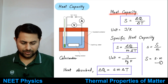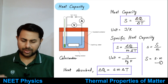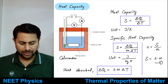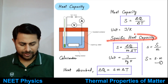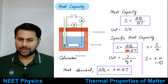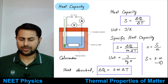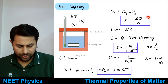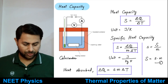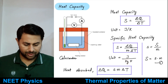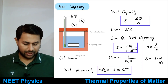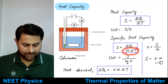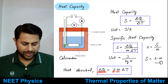Heat capacity S is the amount of heat absorbed or given away by a substance per degree change in temperature: S = delta Q / delta T, with unit joules per Kelvin. Specific heat capacity is the heat absorbed or released per unit mass per degree change in temperature, with unit joules per kg·Kelvin. Heat absorbed can be written as delta Q = s × m × delta T.